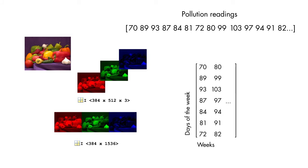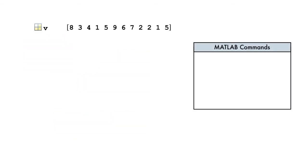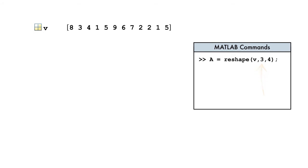Let's see how we can reshape our data in MATLAB by looking at a few examples. First, let's transform this 1 by 12 vector into a 3 by 4 matrix. To do this, we use the reshape function with three inputs: the vector or matrix to be resized, the number of rows in the output array, and the number of columns.